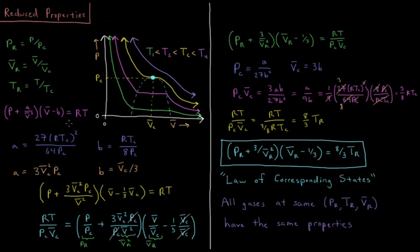Using the critical temperature, pressure, and volume we can derive unique parameters for the van der Waals equation of state. The attraction parameter A equals 27R times the critical temperature squared over 64 times the critical pressure. So not only does this specify unique choices for A and B, it also implies the entire equation of state that we can substitute into, which is what we're going to do here.